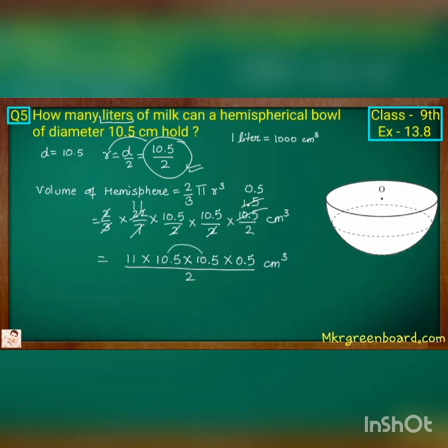Now we will multiply 10.5 into 10.5, we get 110.25 and we multiply 11 into 0.5 we get 5.5, the entire thing divided by 2, centimeter cube.